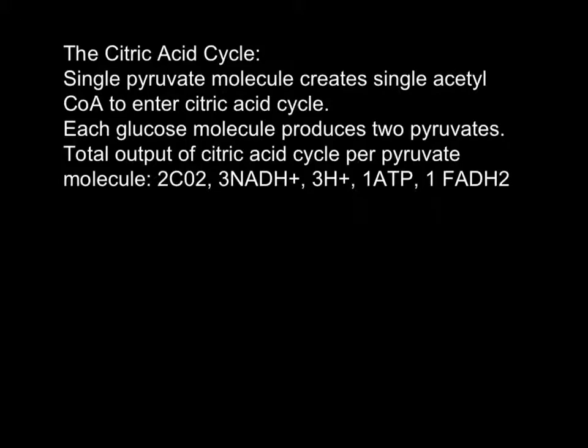The citric acid cycle encompasses a single pyruvate molecule that creates a single acetyl CoA molecule to enter the citric acid cycle. However, each glucose molecule produces two pyruvates. The total output of the citric acid cycle per pyruvate molecule is two CO2 molecules, three NADH+ molecules, three H+ molecules, one ATP molecule, and one FADH2 molecule.